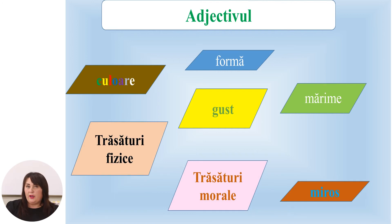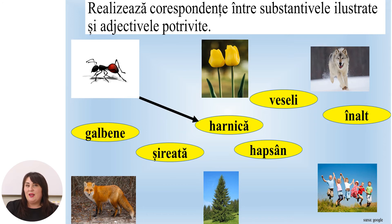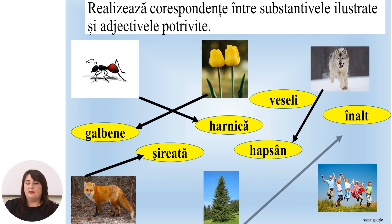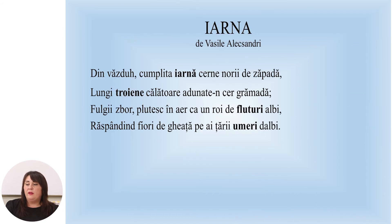Vă propun să realizăm corespondențe între substantivele ilustrate și adjectivele potrivite. Furnică — ce fel de furnică? Harnică. Lalele — ce fel de lalele? Galbene. Lup — ce fel de lup? Hapsân. Vulpe — ce fel de vulpe? Șireată. Brad — ce fel de brad? Înalt. Copii — ce fel de copii? Veseli.